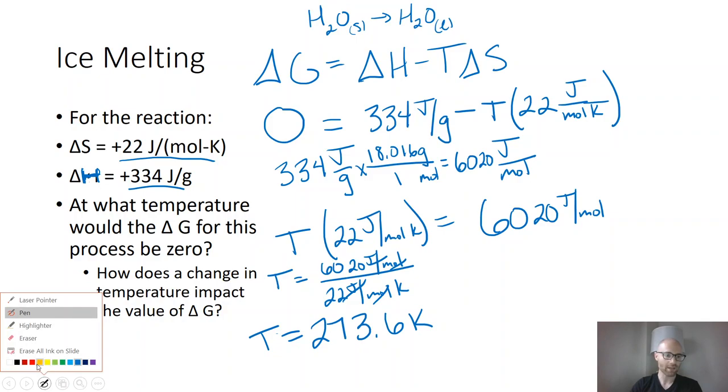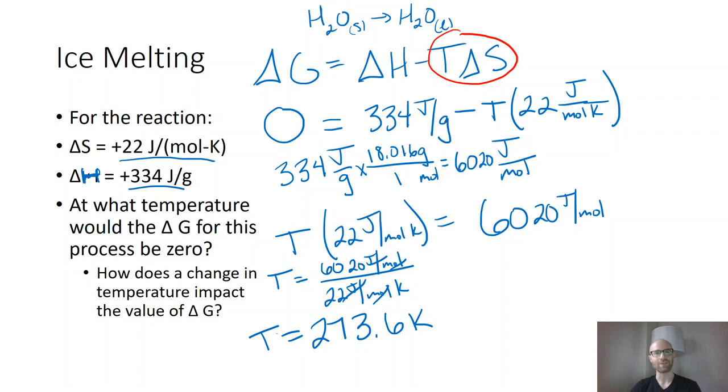Because when the temperature is higher than 273 Kelvin, that means that this T delta S term is going to be larger. And since you're subtracting it, the delta G ends up being zero. In other words, melting is spontaneous when the temperature is above zero Celsius. Which makes sense. Like if you're outside in the world and the temperature is above zero Celsius, you're going to have liquid water. Any solid water will spontaneously on its own turn into liquid.